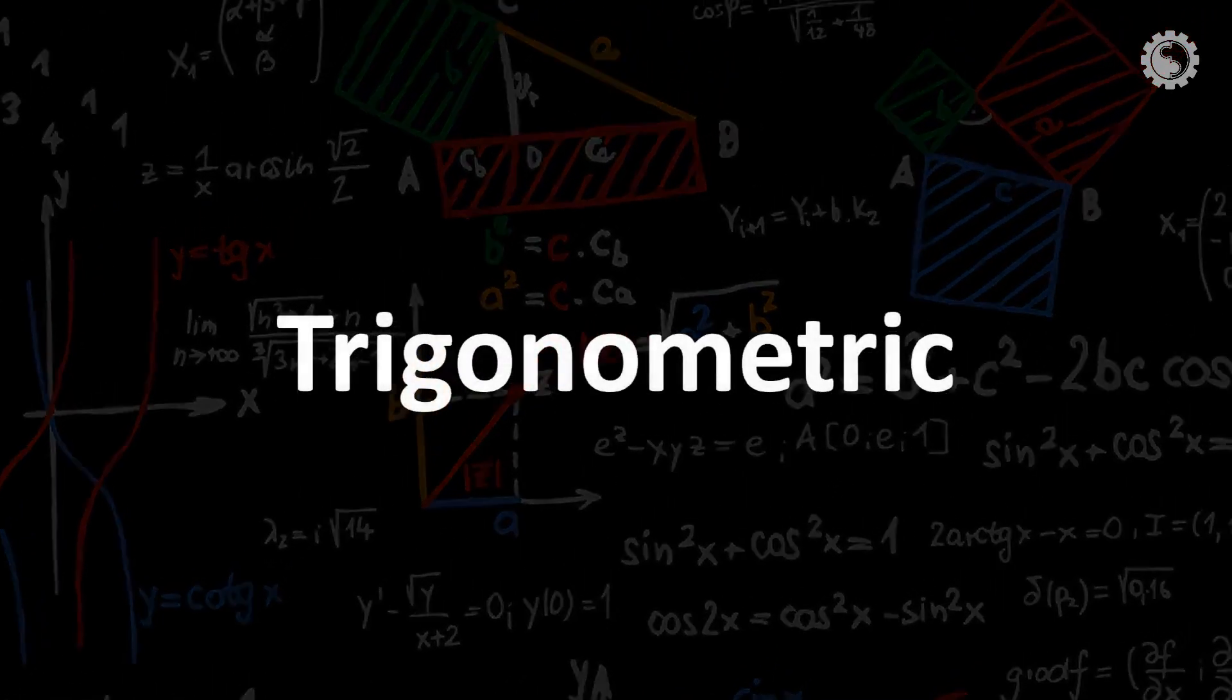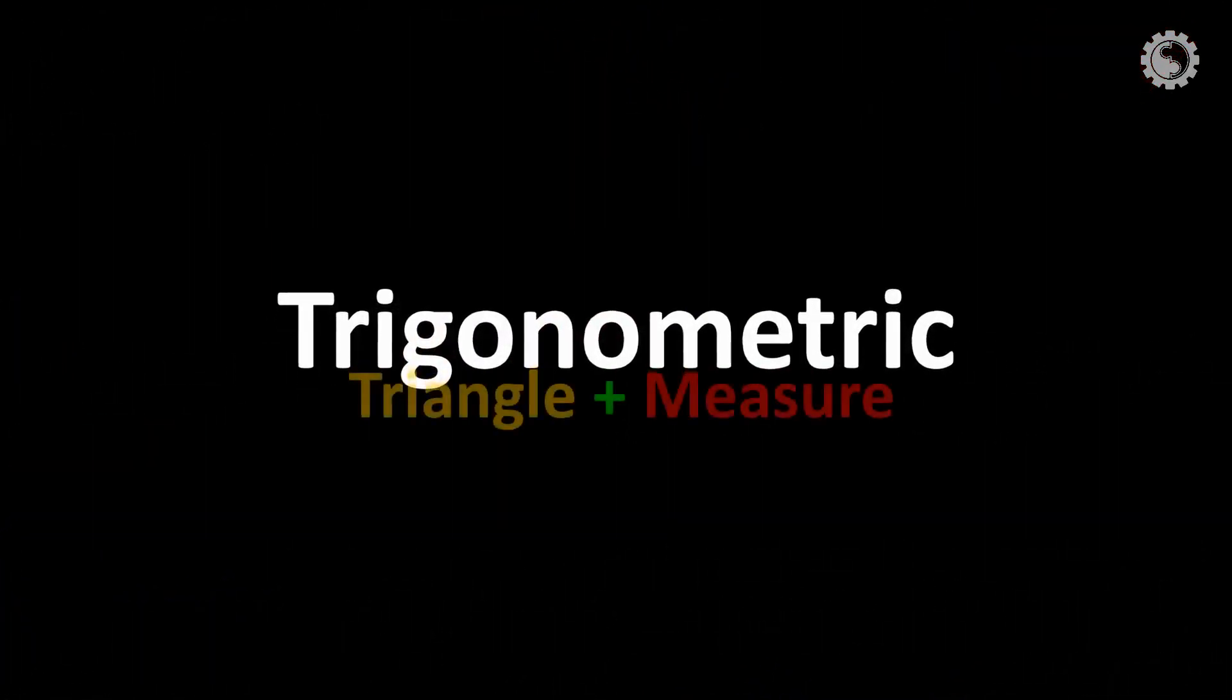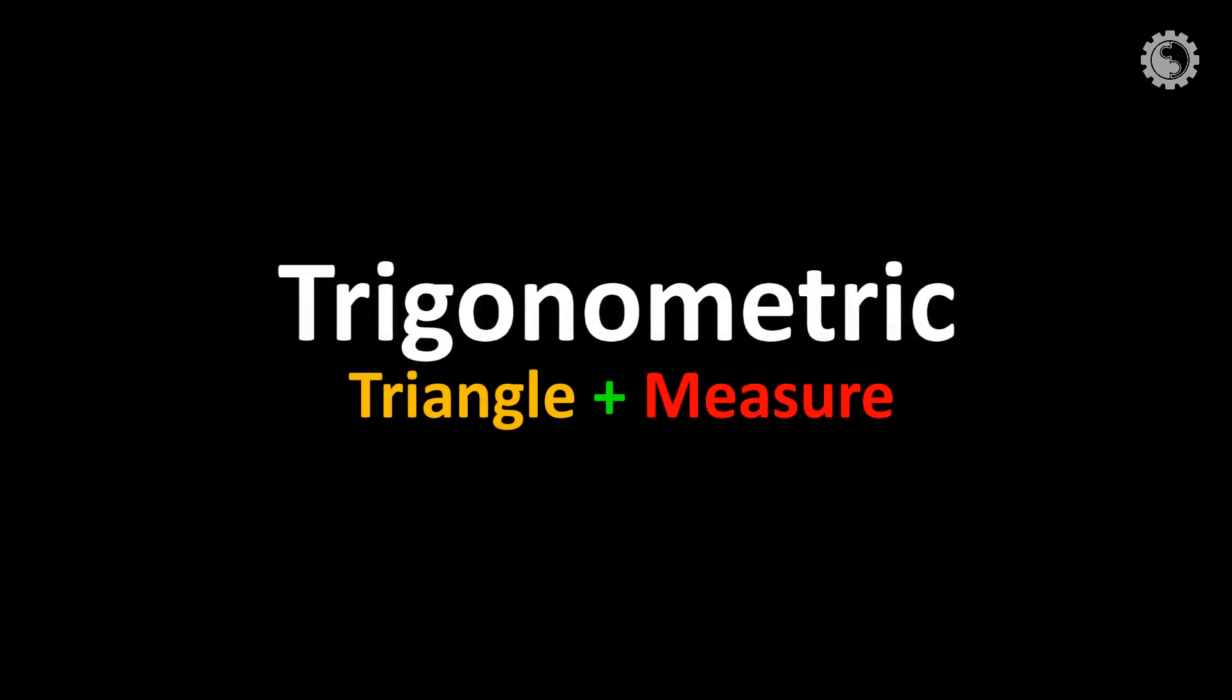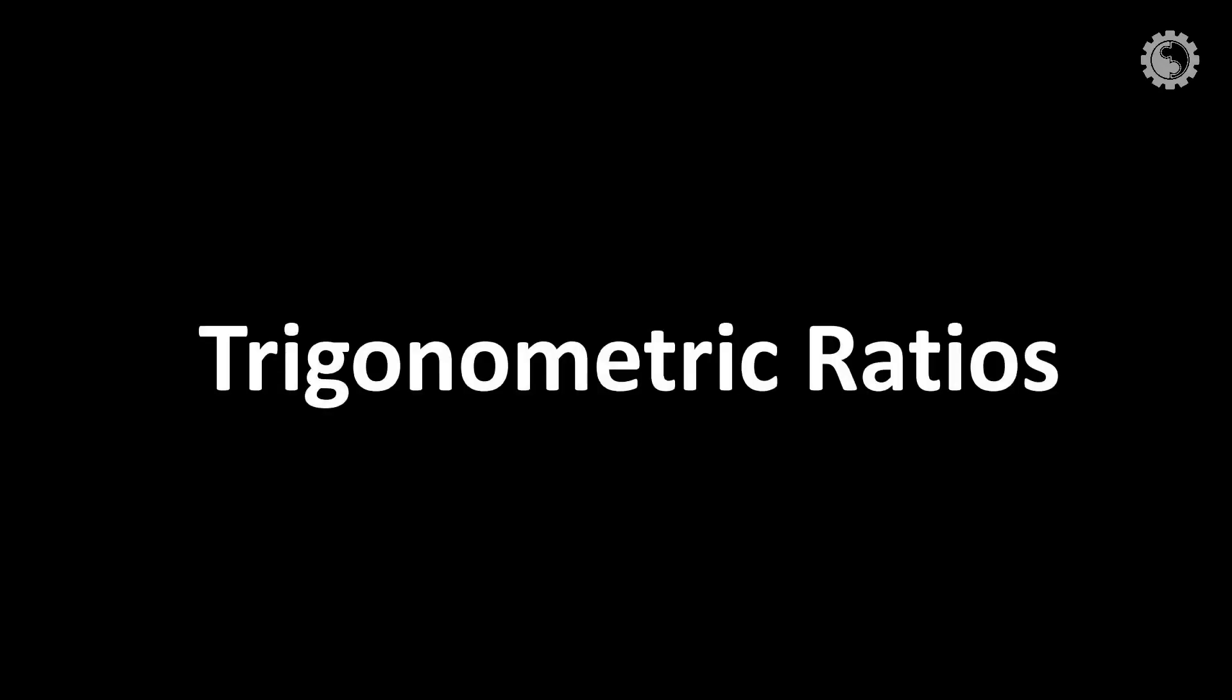Trigonometric is a Greek word. It refers triangle plus measure. It is a branch of mathematics concerned with relationships between angles and ratios of lengths. Trigonometric ratios are the ratios between edges of a right triangle.